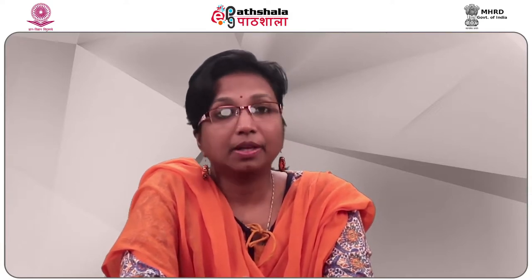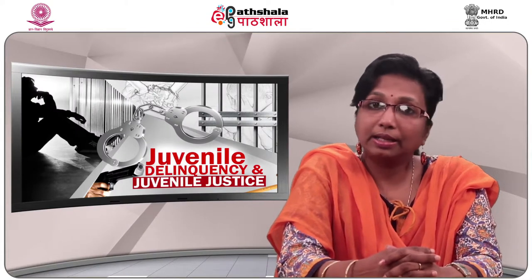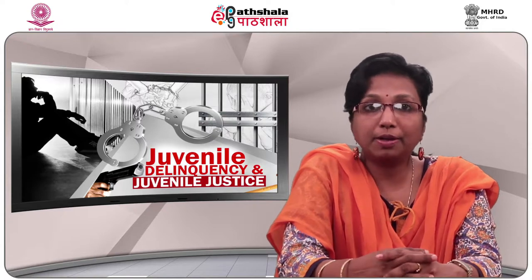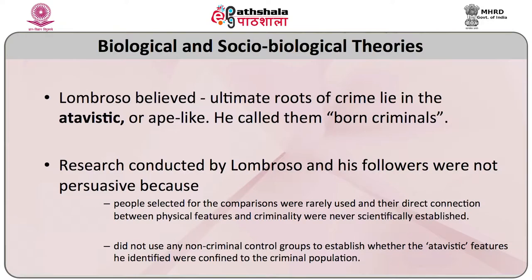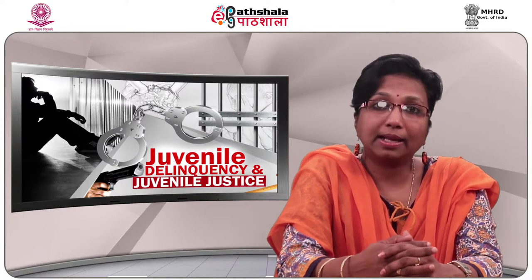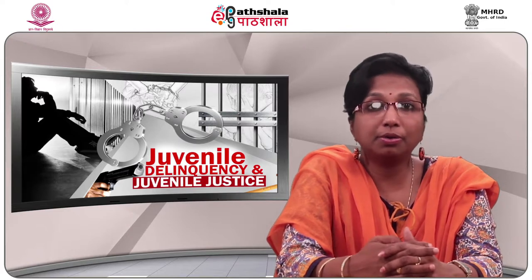Insane criminals included idiots and mentally deranged individuals. Lombroso's work led to great controversy. His failure to include a control group of non-criminals meant he was unable to state whether results would differ if he studied the general public. The research conducted by Lombroso and his followers was not persuasive because comparison groups were rarely used and the direct connection between physical features and criminality was never scientifically established. Lombroso did not use any non-criminal control group to establish whether the atavistic features he identified were confined to the criminal population. In India, Bollywood movies in the 80s and 90s used to project villains as people who looked different and did not conform to social norms or laws.